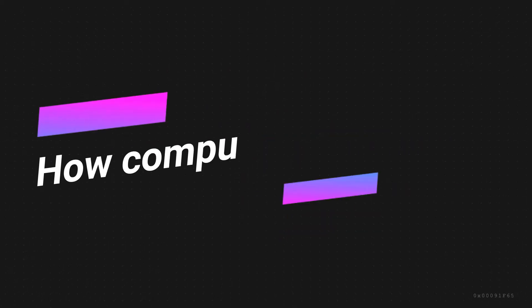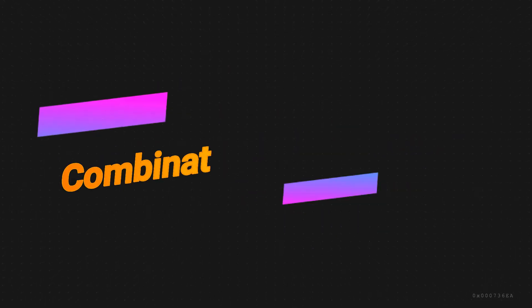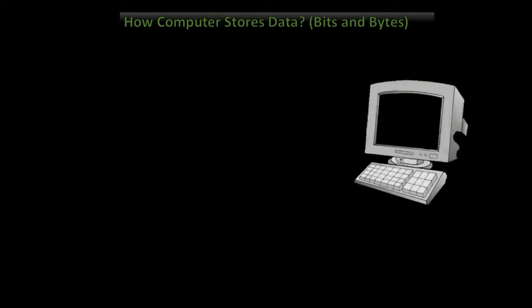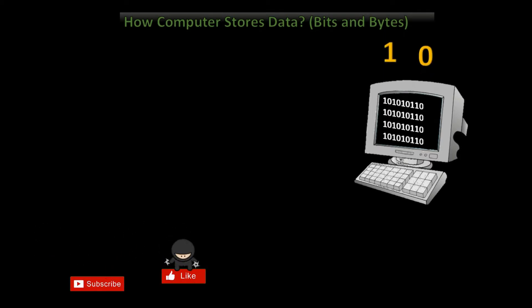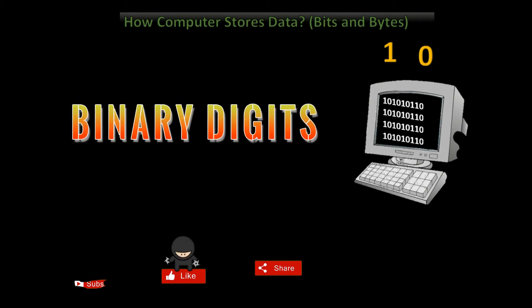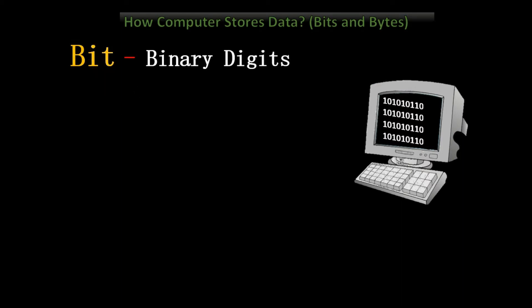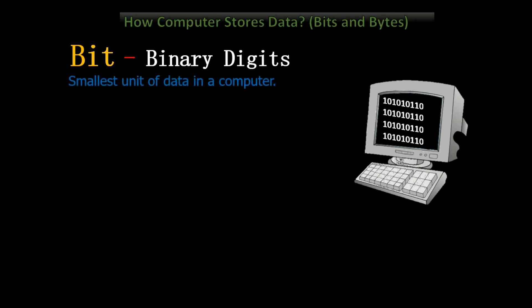Now let us see how computers store data using the combination of 8 bits. Computers use the binary system, which has only two numbers: ones and zeros. The word used to describe the binary digits, which can be either 1 or 0, is a bit. Bit is a short form of binary digits. It is the smallest unit of data in a computer. These bits — ones and zeros — are used to store all kinds of information.